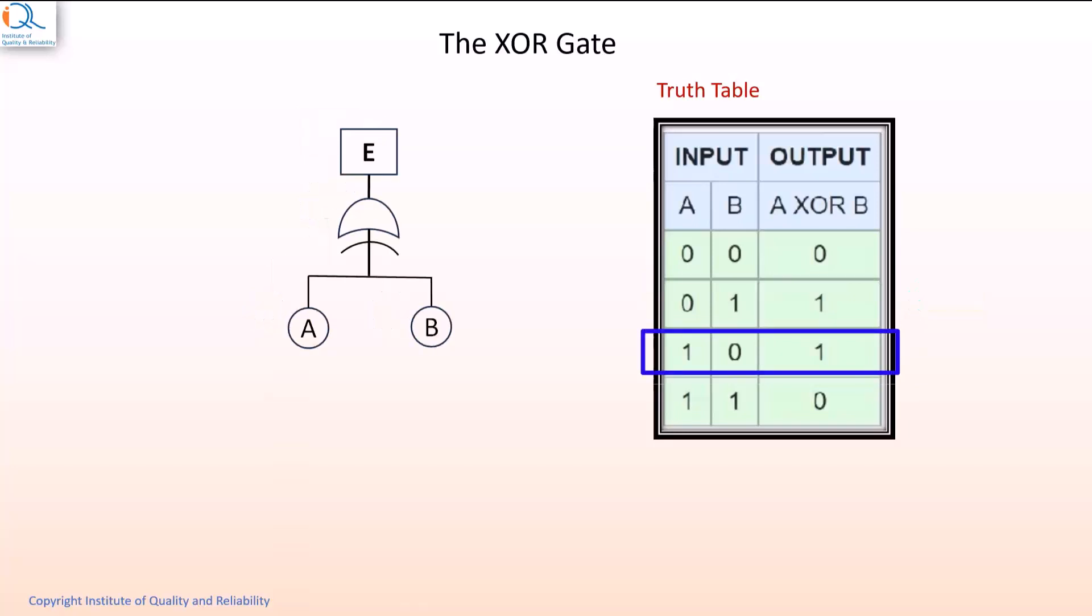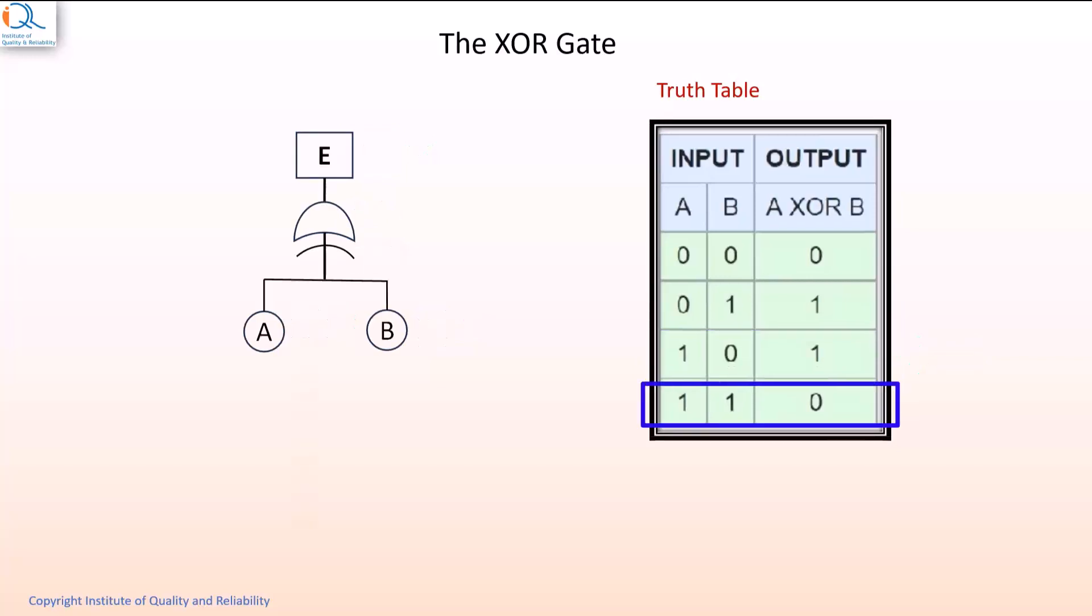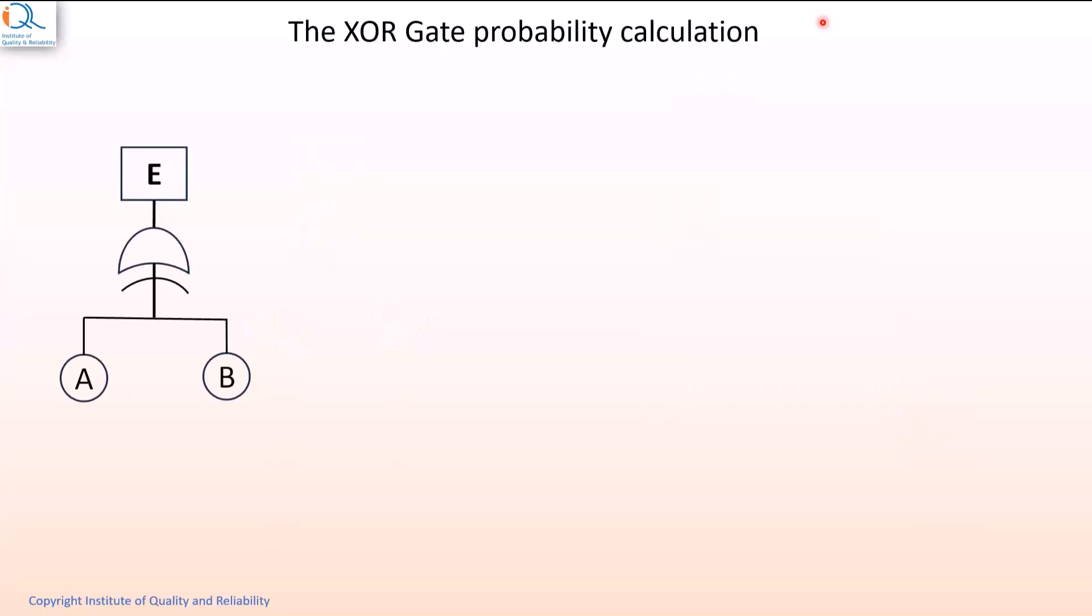Similarly, when the other input event A occurs, but B does not occur, the top level event E will occur. In XOR gate, if the lower level events A and B both occur, then the top level event does not occur. Now, this is the difference between the regular OR gate and an XOR gate. Let us now understand the probability calculation in case of an XOR gate.